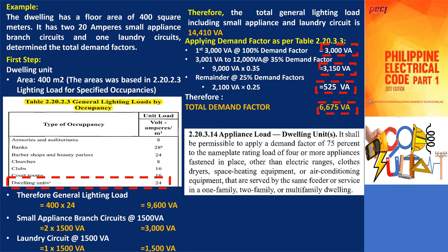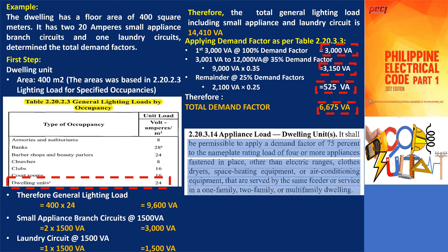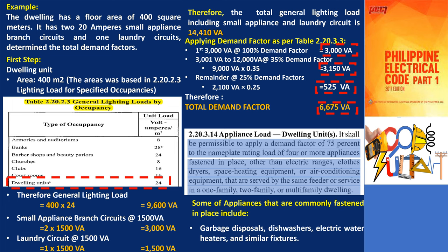To continue for other appliances, we can refer to section 2.20.3.14 of the electrical code — appliance load, dwelling units. According to this section, a demand factor of 75% can be applied to the nameplate rating load of 4 or more appliances that are securely fastened in place. This rule applies to appliances other than electric ranges, clothes dryers, space heating equipment, or air conditioning equipment. It is applicable in one-family, two-family, or multi-family dwellings where these appliances are served by the same feeder or service. Examples of fastened-in-place appliances include garbage disposals, dishwashers, electric water heaters, and similar fixtures.